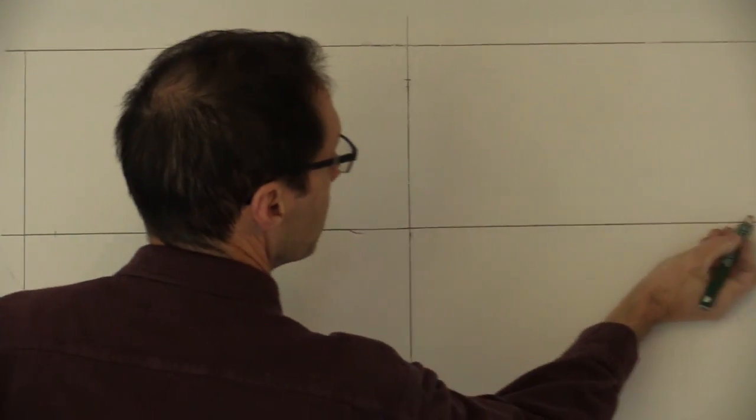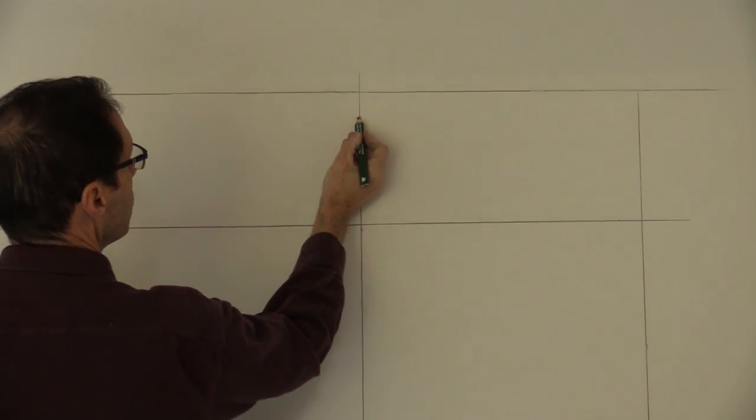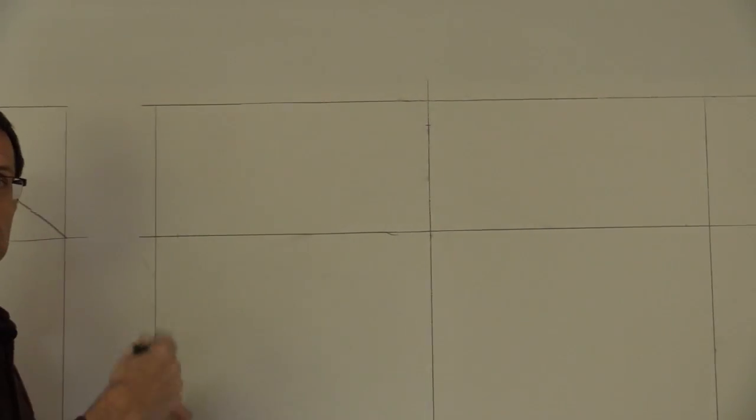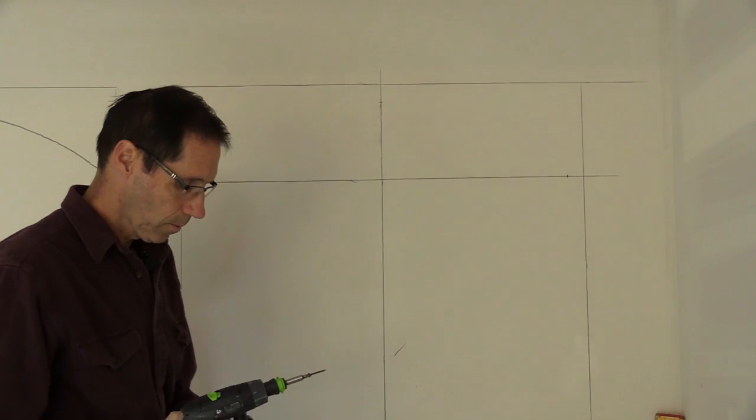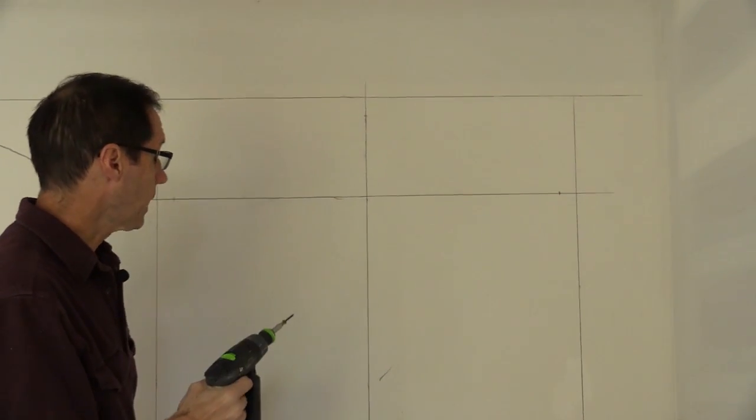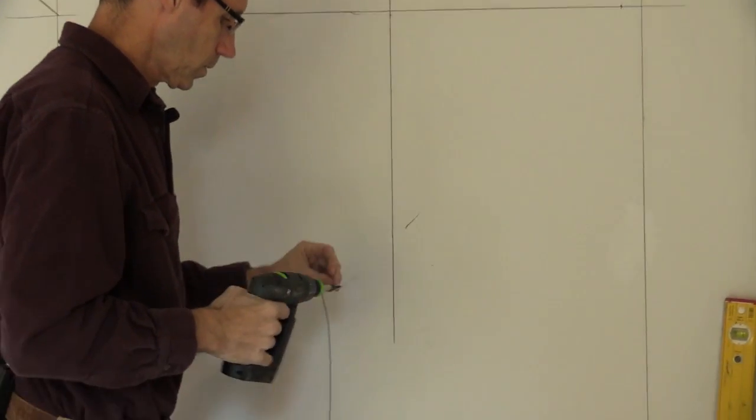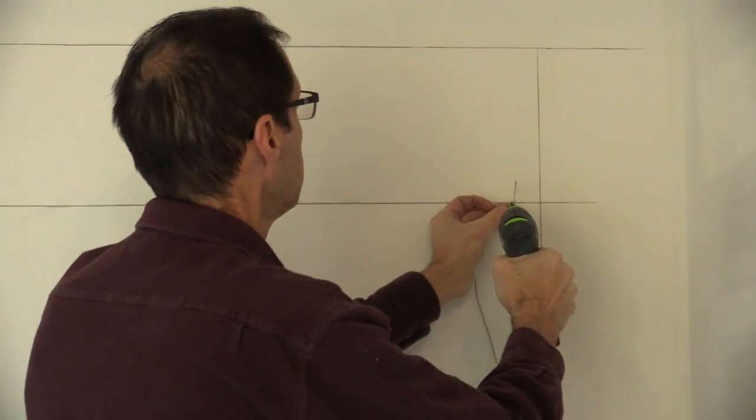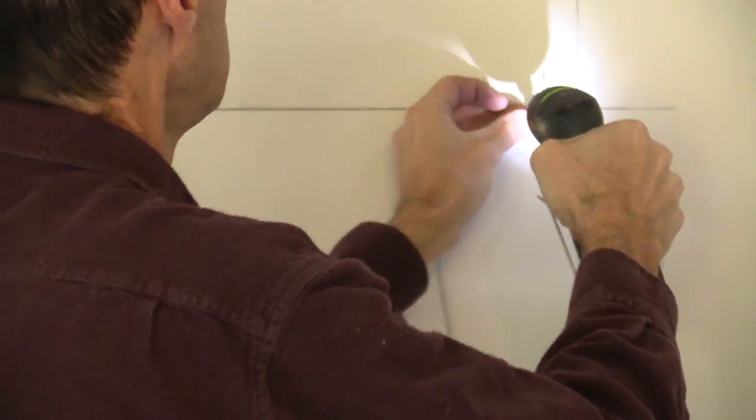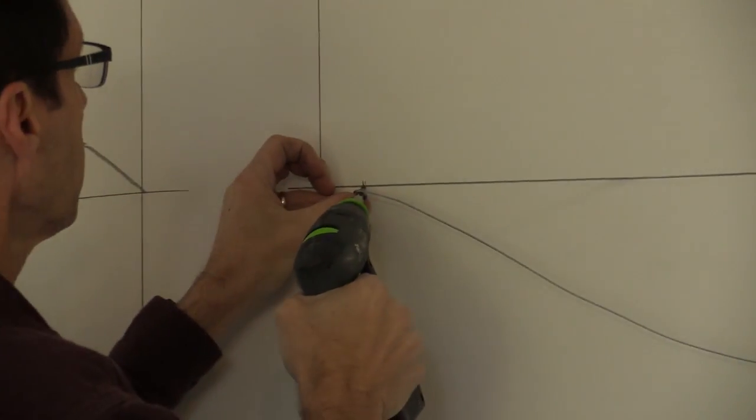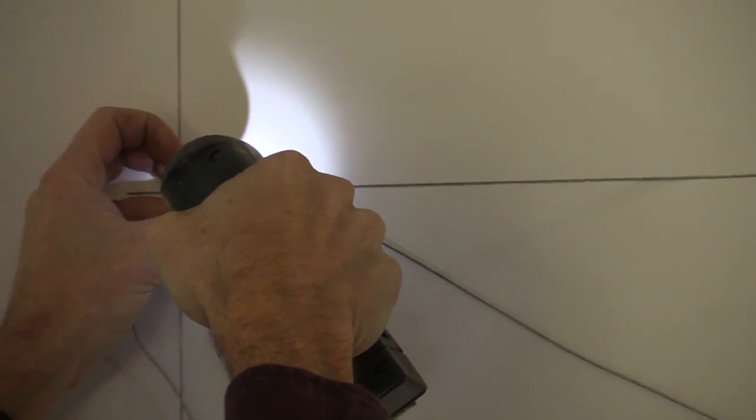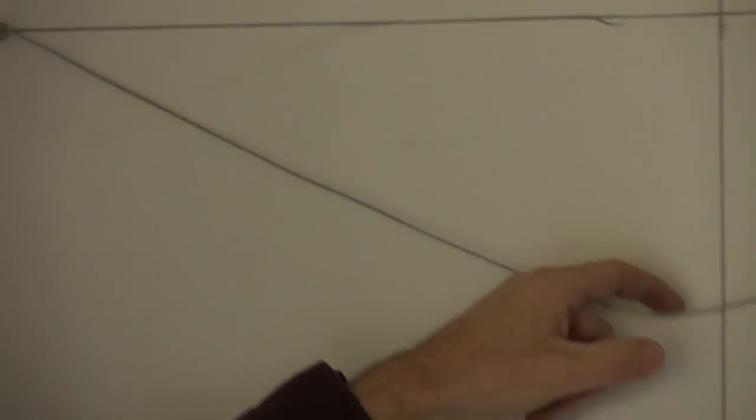So this distance from here to here is 18, plus another 18 is 36, which is the width of your opening, which is your major axis. So now I take this cable with the two little knots in it, and I attach it to the spring line. Just put a screw right through that one knot, and then the knot that's 36 inches apart, I put another screw.